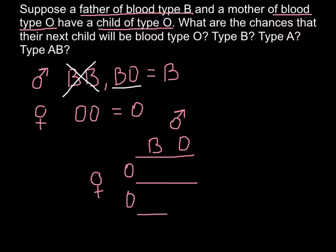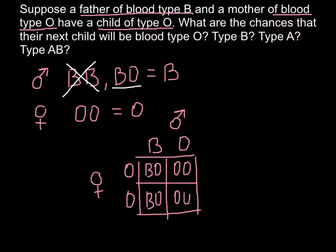Now we build a Punnett square, and here we have BO, OO here, BO here, and OO here. Now we can answer our questions.